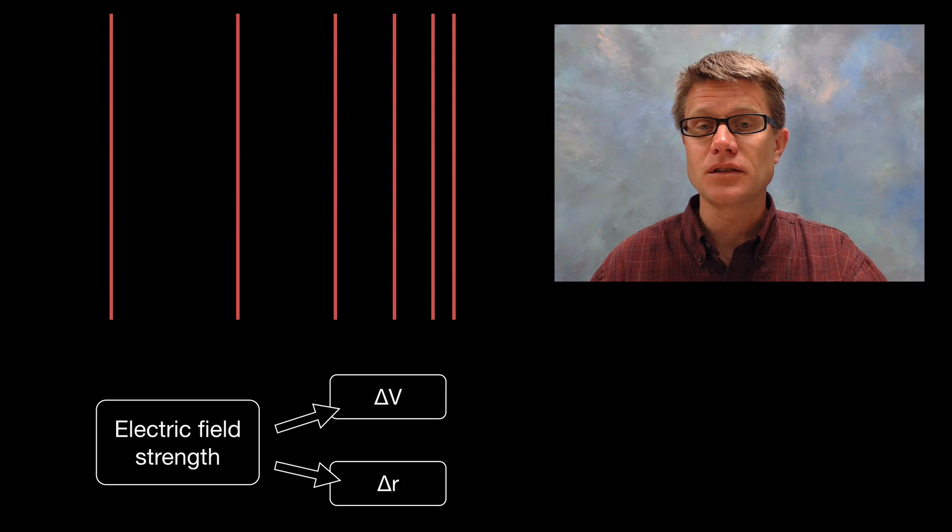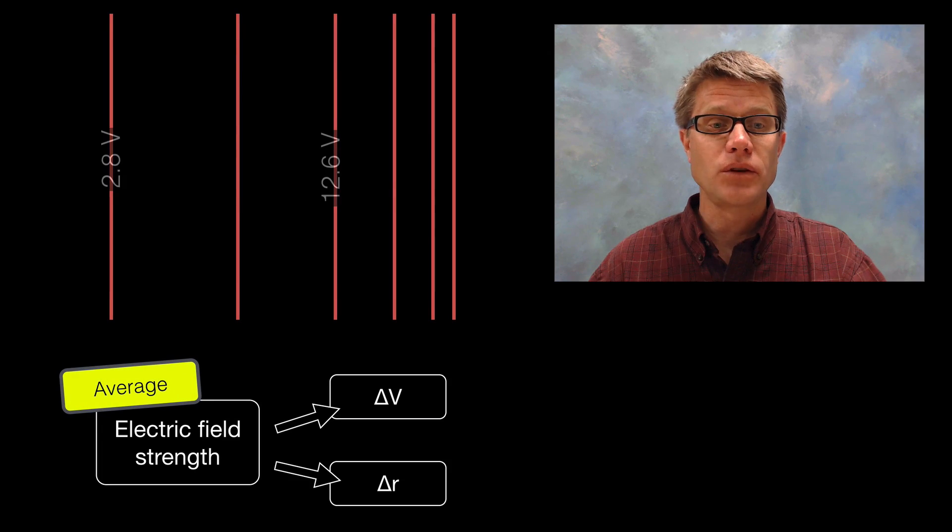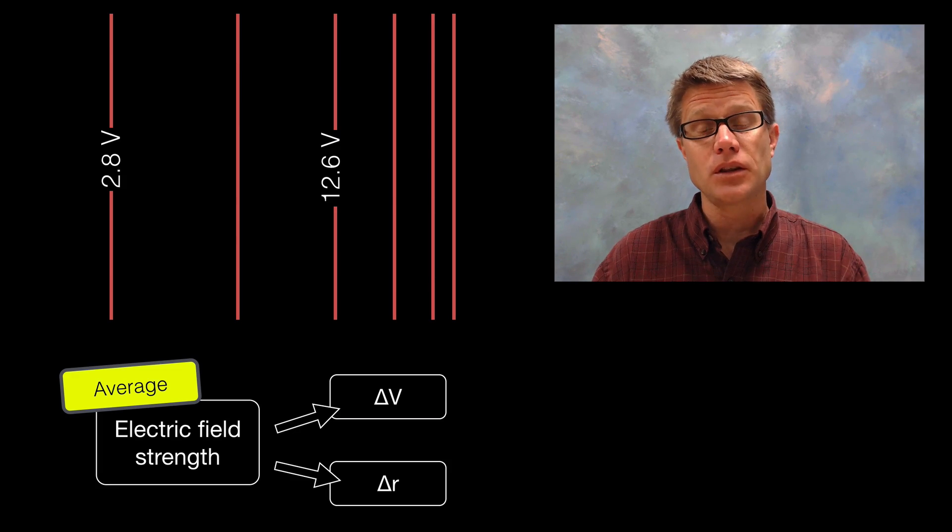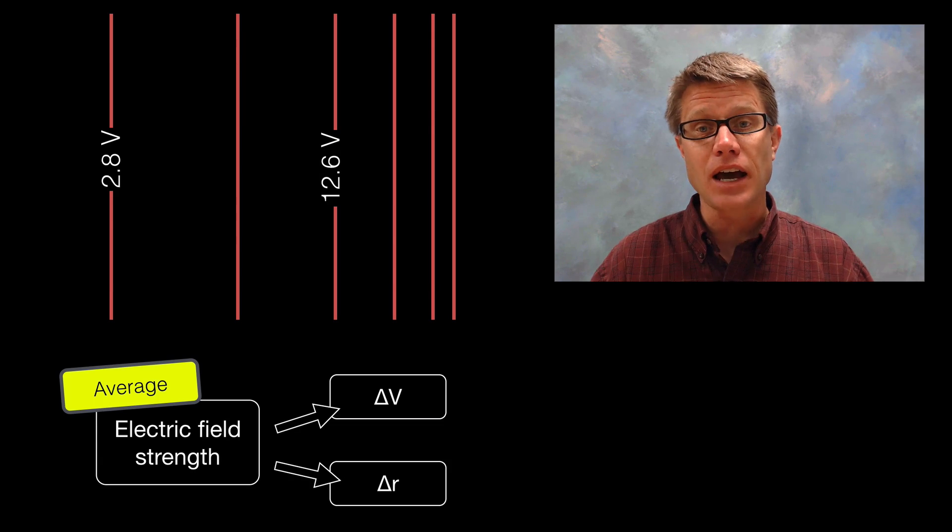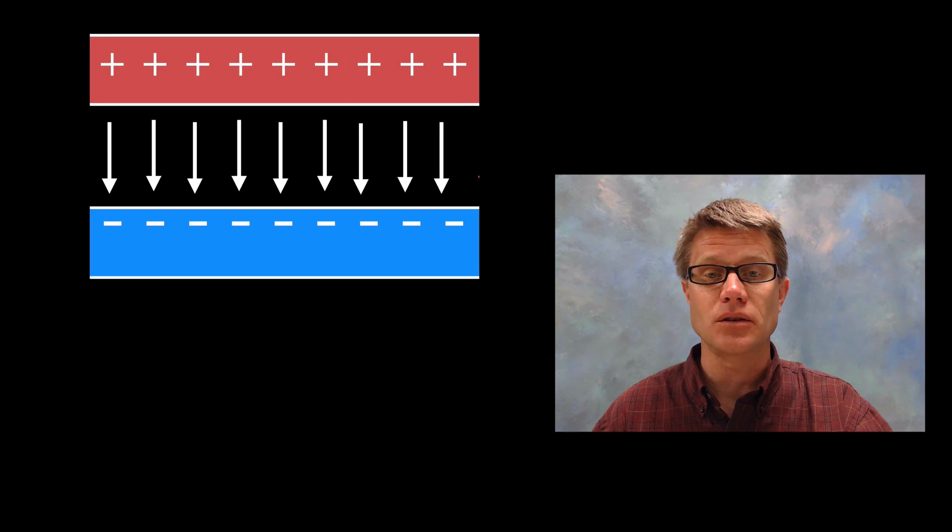But what if we don't have a consistent electric field? What if we have these equal potential lines that are spaced out? Well, then we can just use the average field strength. We find the potential at two different areas, in this case 12.6 and 2.8, and then we divide the difference between those two by the displacement between the two. It's not exact but it's going to give us an average electric field strength.